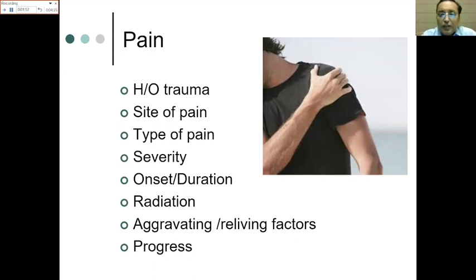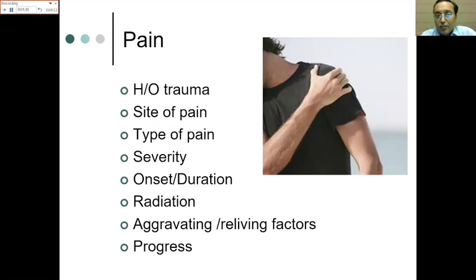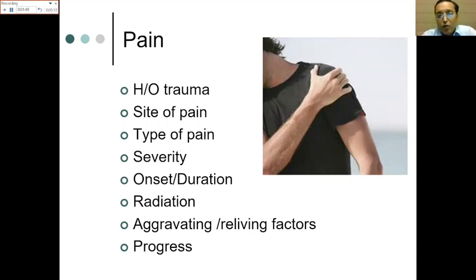The type of pain is also important — a dull continuous pain could be rotator cuff pathology or degenerative changes, while sudden sharp pain could be traumatic, such as a labral tear or SLAP tear. A tingling sensation with radiation points toward nerve pathology. Severity of pain gives clues too — sudden severe pain is typical of inflammatory pathology like supraspinatus calcific tendinitis, where the patient is in extreme distress.